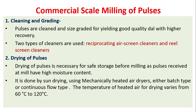Drying of pulses is necessary for safe storage before milling, as the pulses received at the mill have high moisture content. It is done by sun drying or using mechanically heated air dryers, either batch type or continuous flow type. The temperature of heated air for drying varies from 60 degrees Celsius to 120 degrees Celsius.